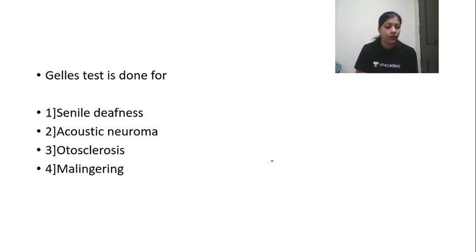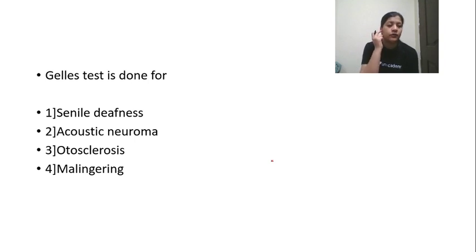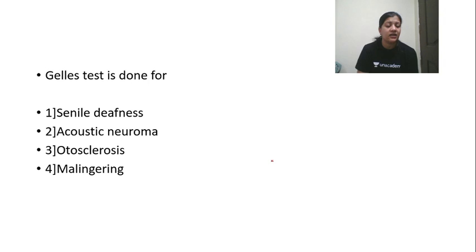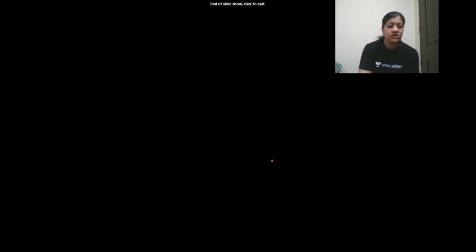Jelly's test is specifically done for otosclerosis. Simply remember: when you alternately open and close the tragus, if you cannot appreciate the increase and decrease in intensity of sound, you have a conductive pathology — especially ossicular fixation as seen in otosclerosis. Jelly's test is done for otosclerosis.